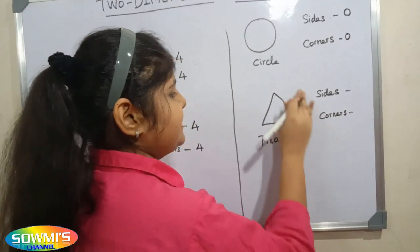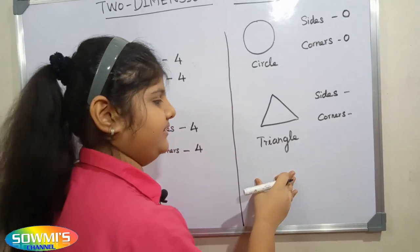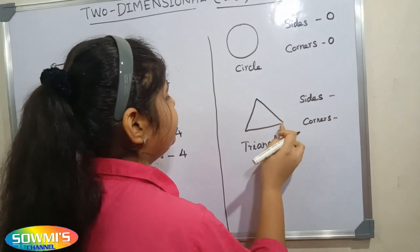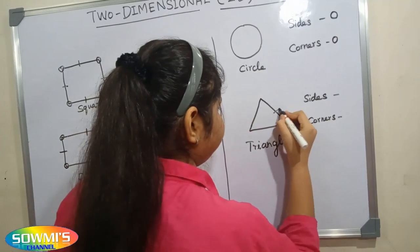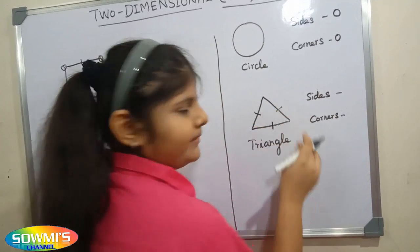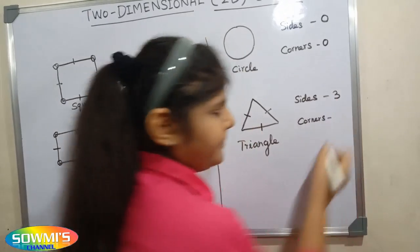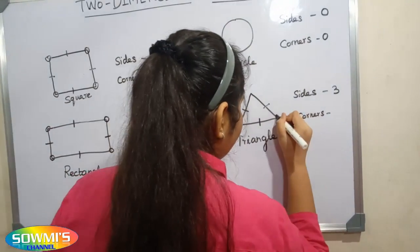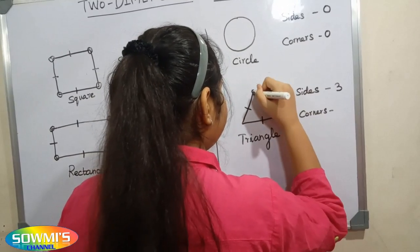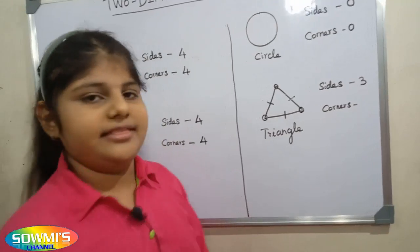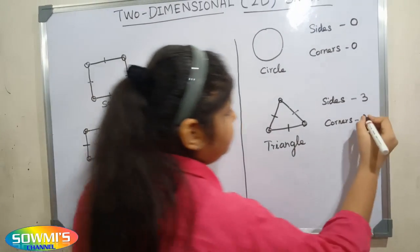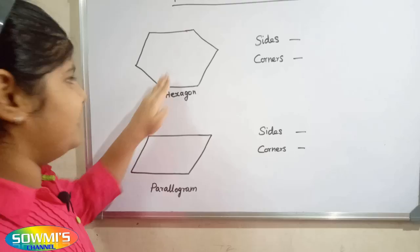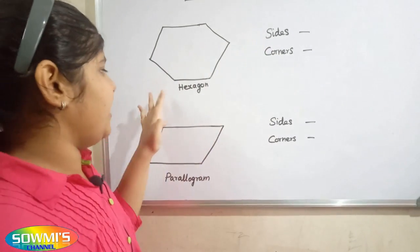Next we will count the sides and corners of a triangle. Next we will take the hexagon. This is a hexagon. First we will count the sides of the hexagon.